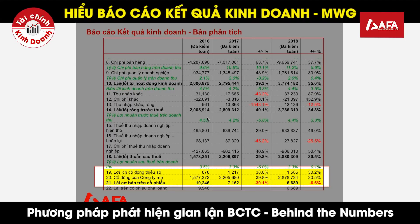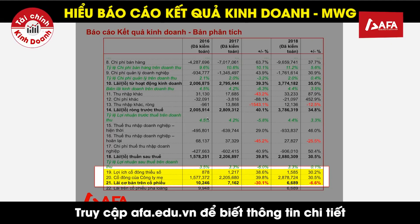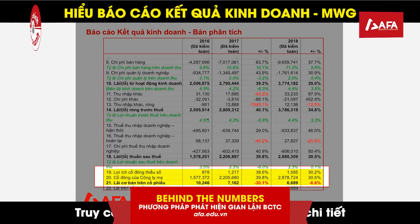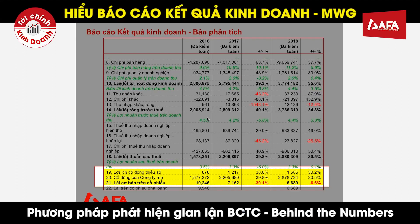Tôi đã trình bày tổng quan về các chỉ tiêu trên báo cáo kết quả kinh doanh. Để hiểu được các chỉ tiêu này, chúng ta phải sử dụng kỹ thuật phân tích ngang và phân tích dọc. Với ví dụ là công ty cổ phần Thế Giới Di Động, đây là một ví dụ minh họa điển hình. Tuy nhiên, mỗi ngành nghề khác nhau sẽ có cấu trúc và yêu cầu khác nhau đối với việc hiểu các chỉ tiêu trên báo cáo kết quả kinh doanh. Hy vọng bài tập tình huống này có thể mang lại cho các bạn hiểu biết nền tảng về báo cáo kết quả kinh doanh của một doanh nghiệp. Xin chân trọng cảm ơn.